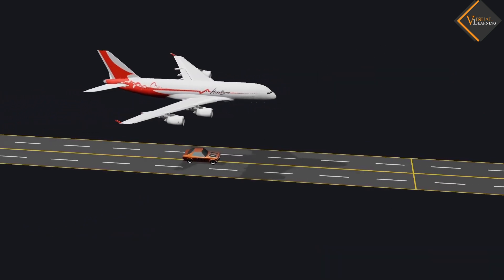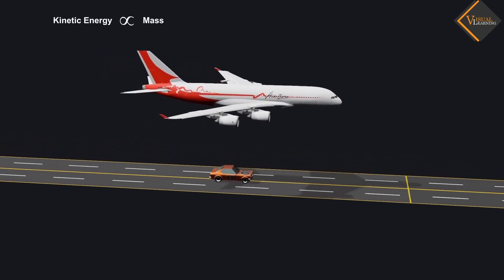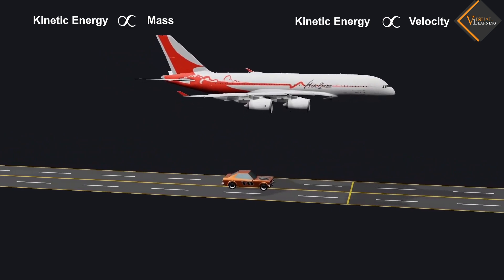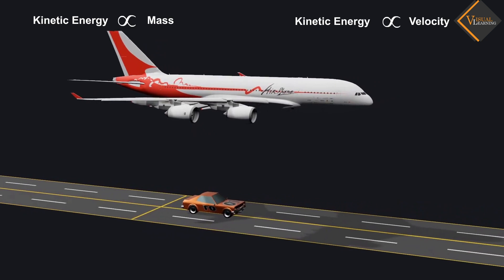The kinetic energy possessed by these objects depends upon their masses and their velocity. Any moving object possesses kinetic energy due to its motion.